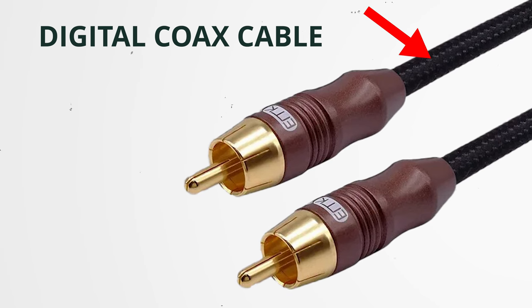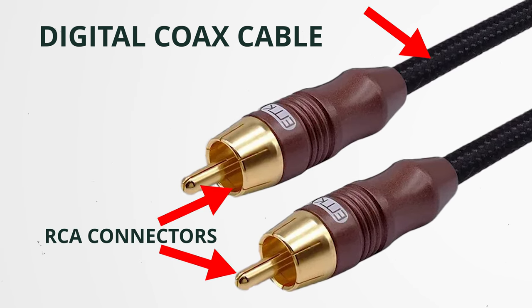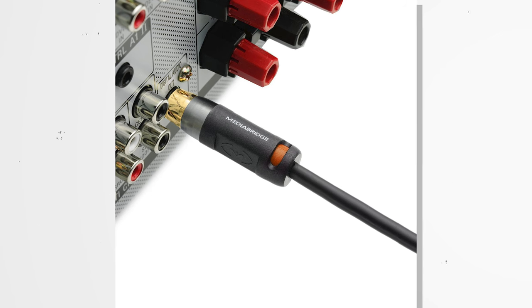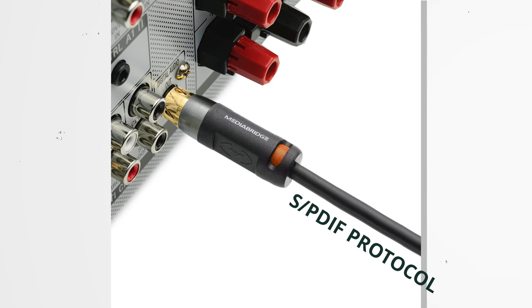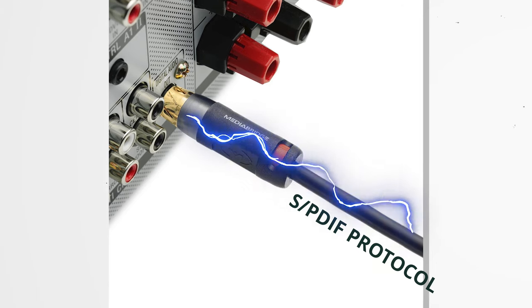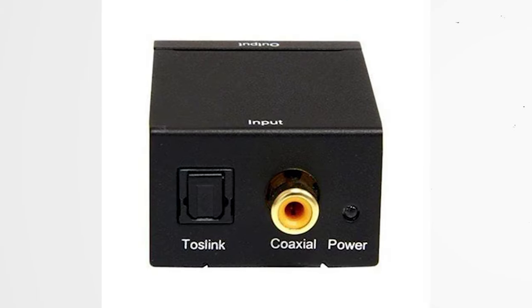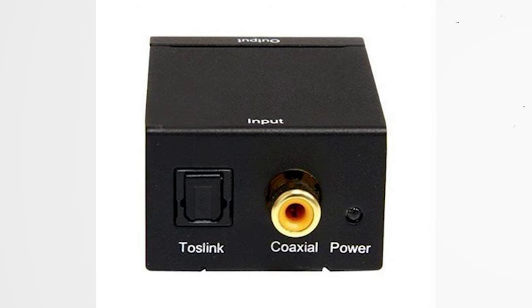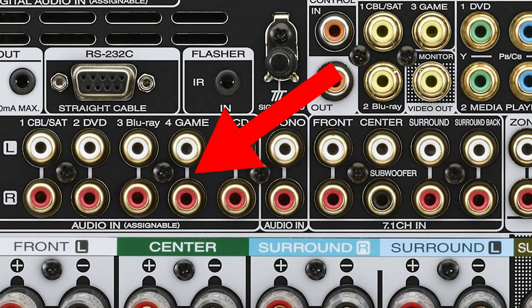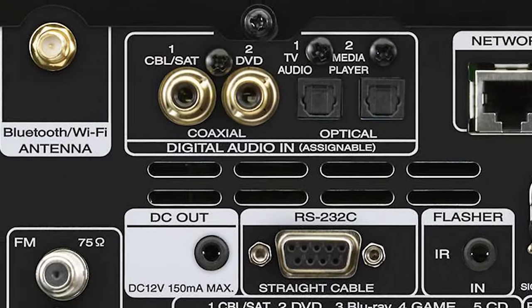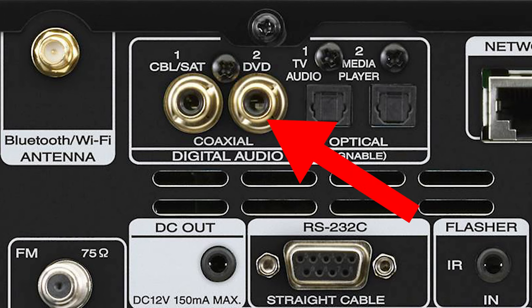So when you hear the term RCA cable nowadays, that's technically a digital coax cable terminated with RCA connectors on each end. A digital coax cable carries that digital audio signal using the SPDIF protocol through electrical impulses. To distinguish it from analog signals, digital coax cables and ports are usually designated with the color orange, as opposed to red and white like you're probably most familiar with — although sometimes digital coax ports can be black depending on the component.